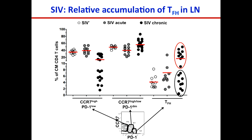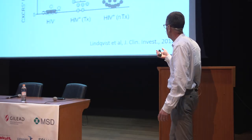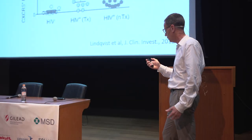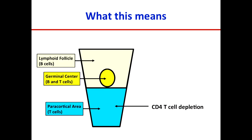As Hendrick Streak showed, around the same time we were doing work in SIV, he was doing work in HIV and saw the exact same thing in humans. During infection, you actually get CD4 T cell depletion in the T cell zones, but you get an accumulation of T follicular helper cells within the germinal centers.